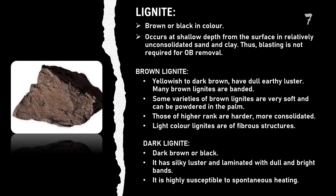Moving to the next type: lignite. It is brown or black in color with 25–35% carbon. It occurs at shallow depth from the surface in relatively unconsolidated sand and clay, so blasting is not required for overburden removal. It is of two types: brown lignite and dark lignite. Brown lignite is yellowish to dark brown; many are banded, some varieties are very soft and can be powdered in the palm, while those of higher rank are harder and more consolidated. Light-colored lignites are of fibrous structure. Dark lignite is dark brown or black, has a silky luster, is laminated with dull and bright bands, and is highly susceptible to spontaneous heating.